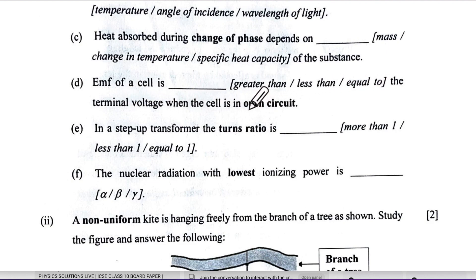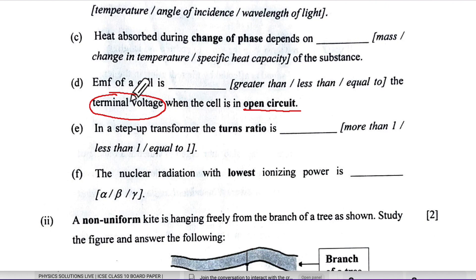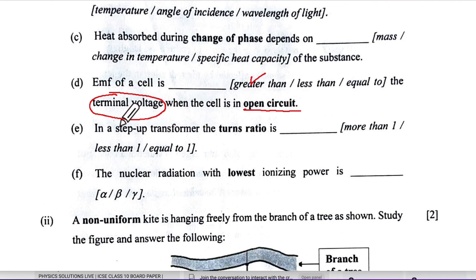When the cell is in open circuit, there is no terminal voltage — the voltmeter reads only the EMF. Terminal voltage is seen only when the circuit is closed. So the answer is 'greater than', because terminal voltage in an open circuit is zero.